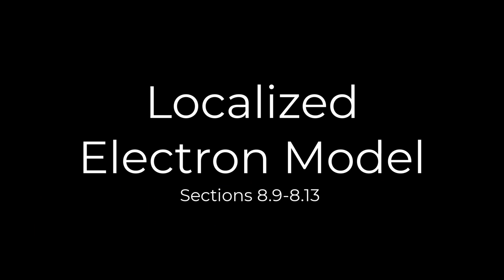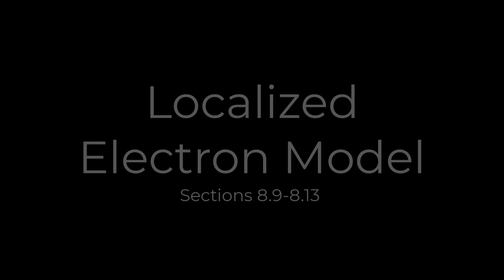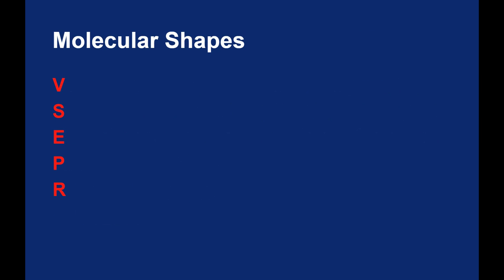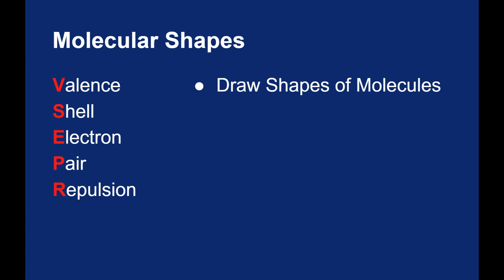Our next couple of classes are going to be based on the localized electron model. The localized electron model explains bonding by having electron pairs shared between atoms. The localized electron model underpins Lewis structures, and the Lewis structures also lead us to our molecular shapes through VSEPR. As a reminder, VSEPR is the acronym for valence shell electron pair repulsion. It's the model that lets us draw the shapes of various molecules.